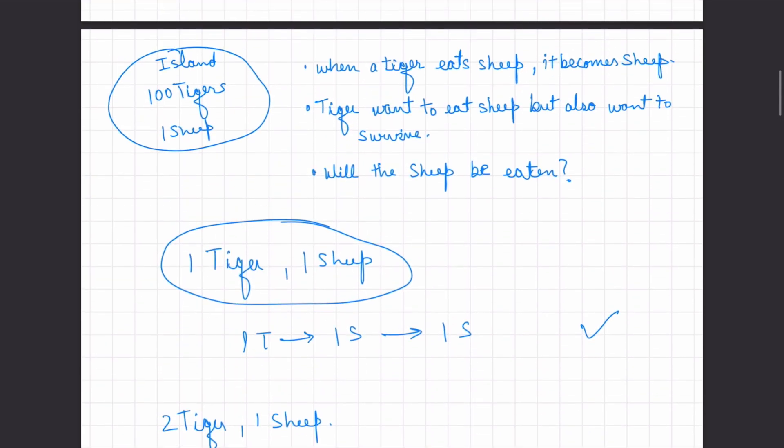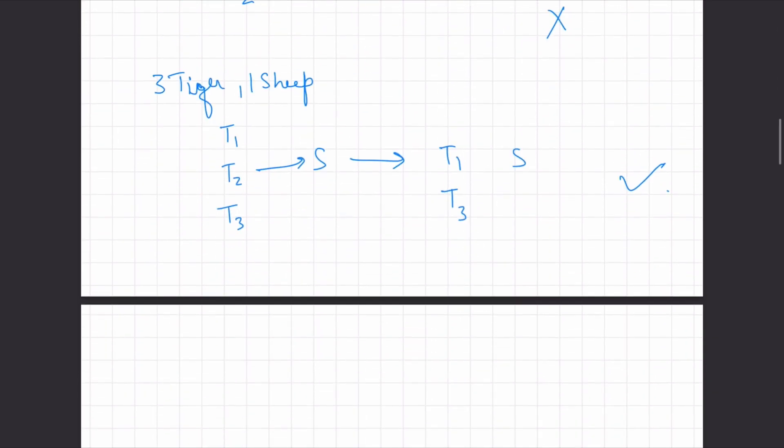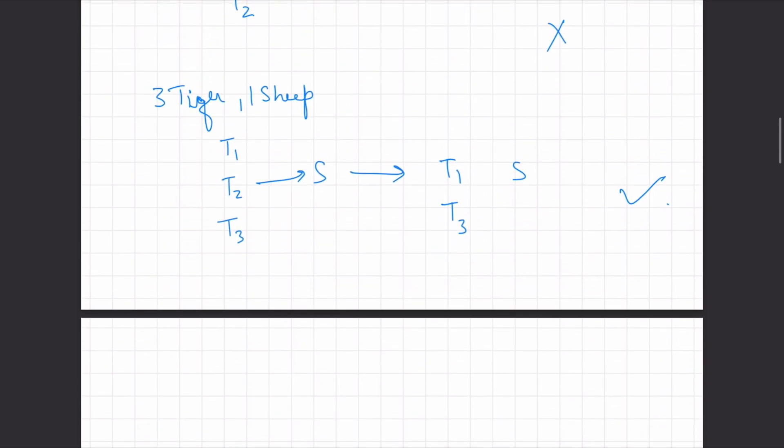Now the question asked us for 100 tigers. So this is an even case. In this case, it will not be eaten. And the reason is, when it would be 99 tigers and one sheep, the sheep would be eaten. But the moment it's 100 tigers, they know it's again an even case, it would not be eaten. So the answer is no, it would not be eaten.